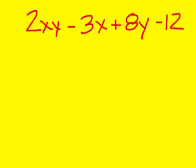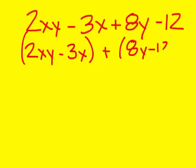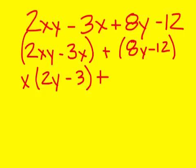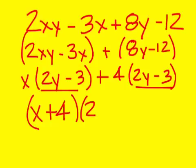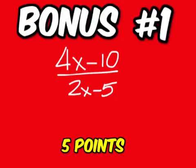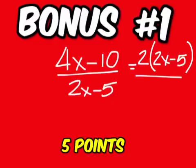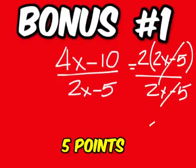On the practice problem, you can start with 2xy minus 3x and then 8y minus 12. And you can factor out an x and be left with 2y minus 3, and then take out a 4 over here to get 2y minus 3. Same terms there and there, so x plus 4 and 2y minus 3. On the bonus, you can factor out a 2 on the top and be left with 2x minus 5, which cancels with the bottom. The answer is 2.